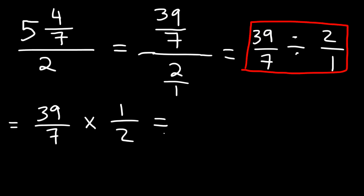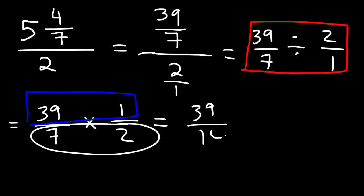So now we can multiply across. And so we have 39 times 1, which is 39, and then 7 times 2, which is 14. So our answer is 39 over 14.